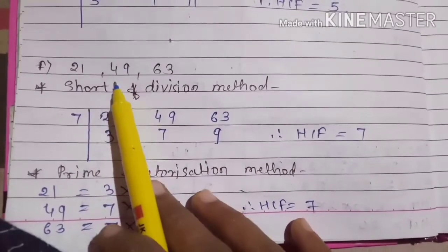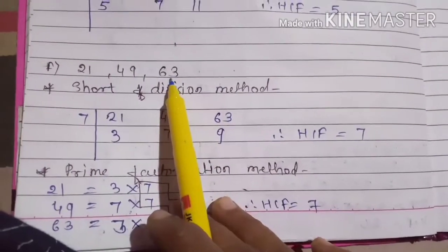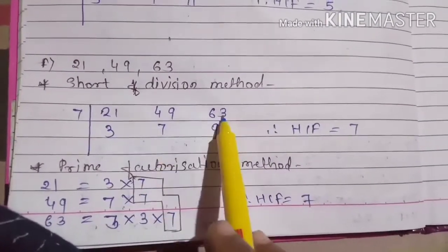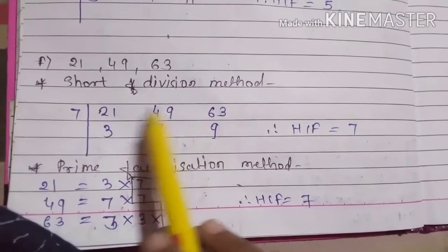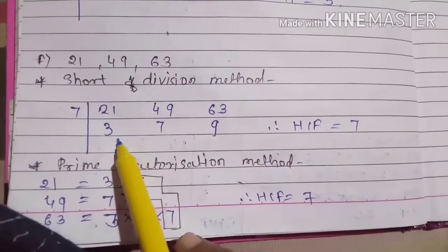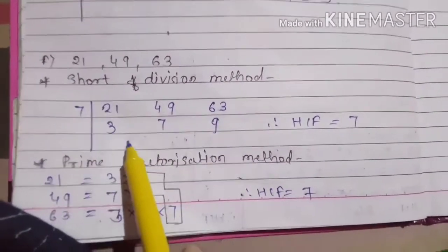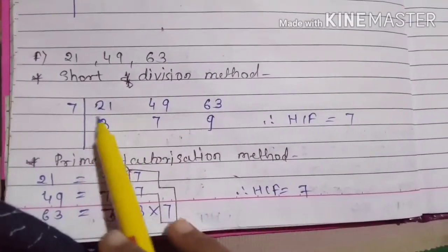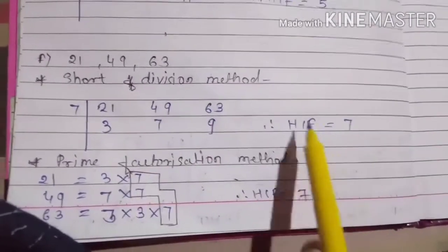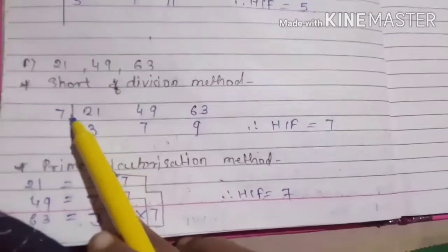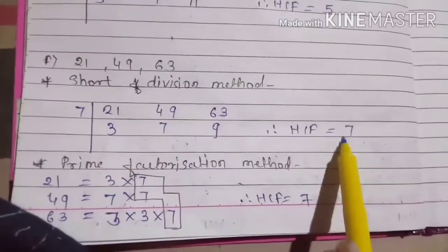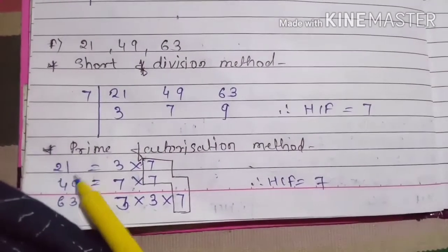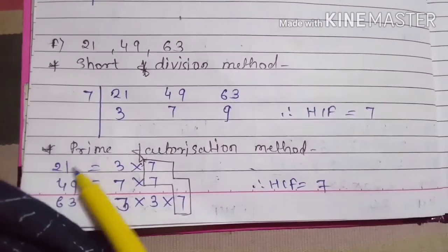Question B: find the HCF of 21, 49, and 63. First, using the short division method, write down the three numbers side by side. Find the common factor that divides all three numbers: 7 threes are 21, 7 sevens are 49, 7 nines are 63. Since only one number remains on each side, the HCF is 7.